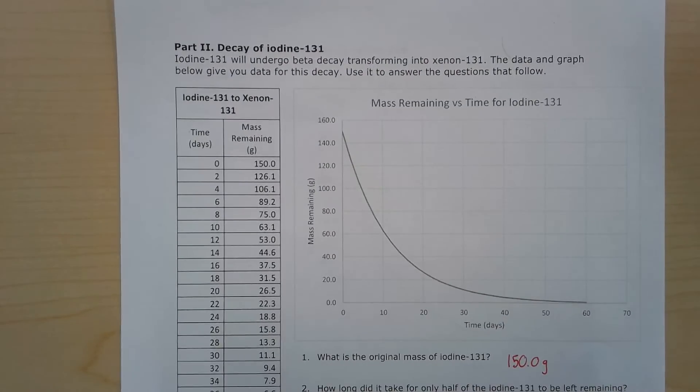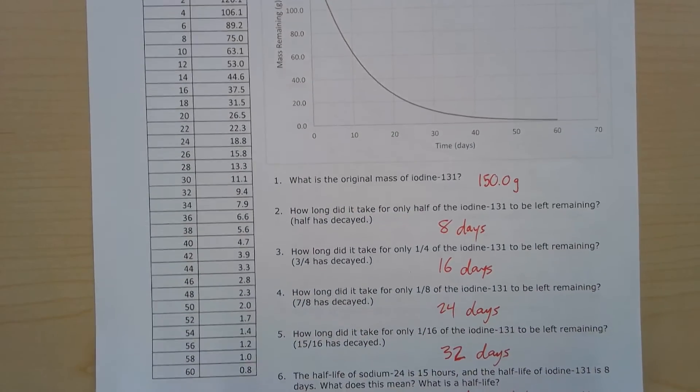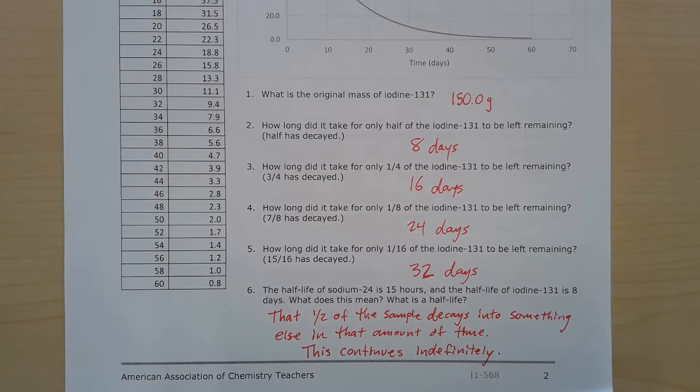Okay. On the next page, we have part two, which is the decay of iodine-131. It says iodine-131 will undergo beta decay, transforming into xenon-131. The decay and graph below give you data for this decay. Use it to answer the questions that follow. So we have a very similar setup here, but it's for a different element.